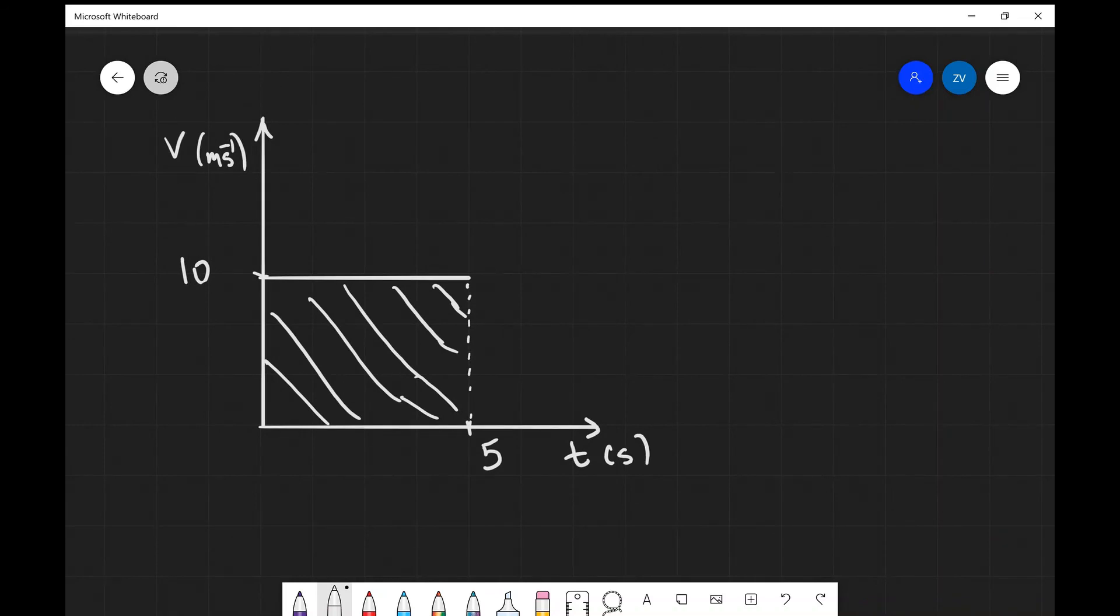Well, if we were to find the area, what we must do is multiply our velocity, our change of velocity really, multiplied by the change in time. Well, if we think about it, this is actually our displacement.